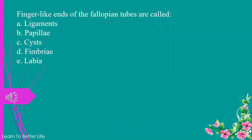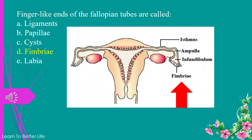Finger-like ends of the fallopian tubes are called: a. ligaments. b. papillae. c. cysts. d. fimbriae. e. labia. The answer is d. fimbriae.